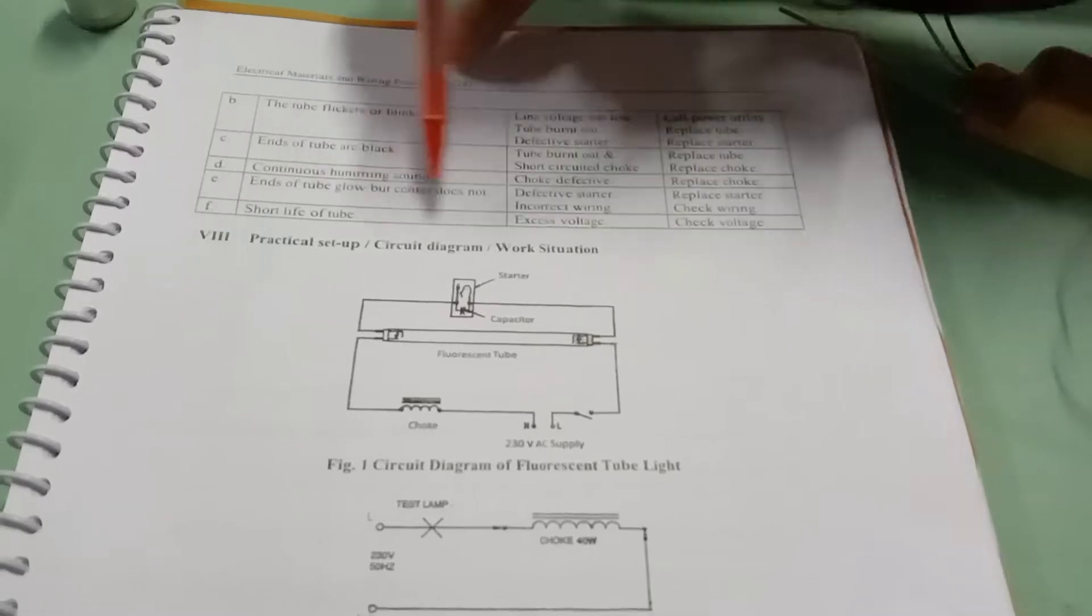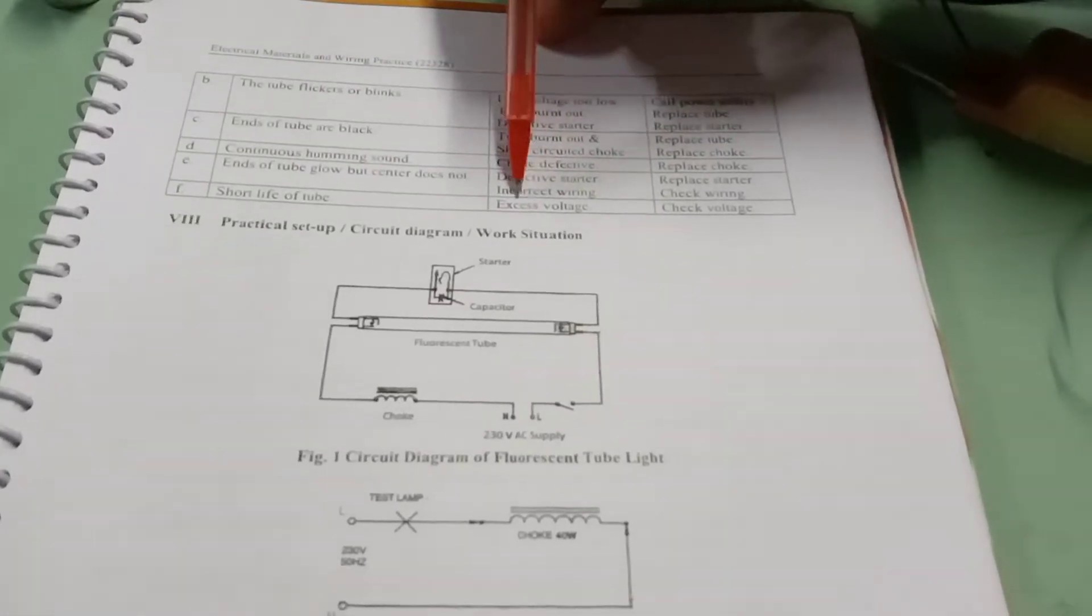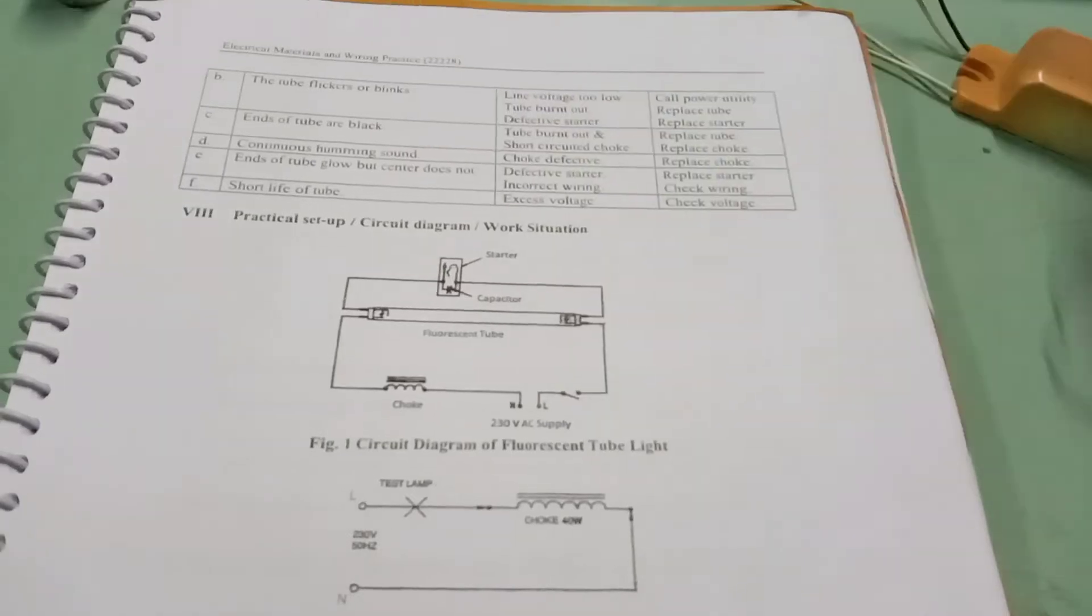Short life of tube means this is possible due to the excess voltage. We have to check the voltage.